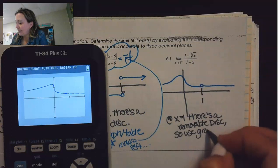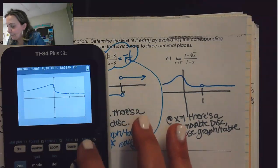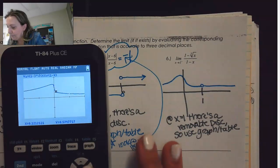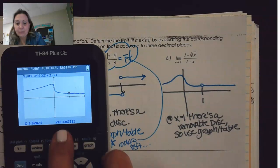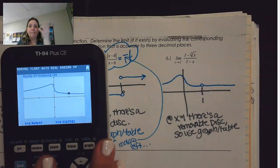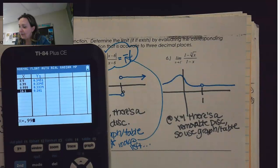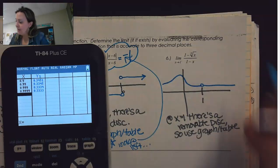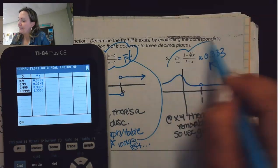We can use either the graph or the table. If I go to the graph and try to trace from the left-hand side, you can see how those values are getting closer and closer — like here it's 0.96, and then very close to 0.33. Using our table we could go 0.9, 0.99, 0.999, and you can see these values get closer and closer to one-third or 0.3 repeating. This says to round to three decimal places, so we'll say that's going to be about 0.333.